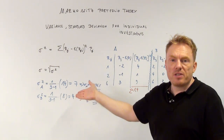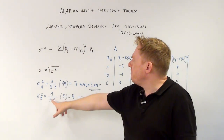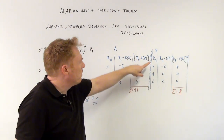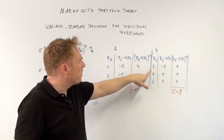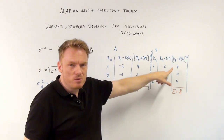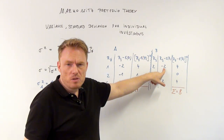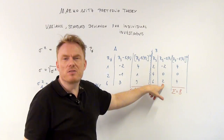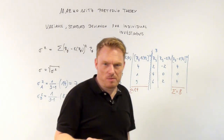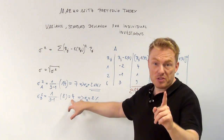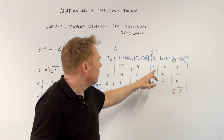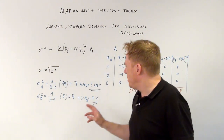The same computation holds true for share B. We have one divided by n minus one, and we have three different situations. The expected return for share B is four percent: two minus four is minus two, four minus four is zero, six minus four is equal to two. We compute the squares: minus two times minus two is four, zero times zero is zero, two times two is four. The sum is eight; eight divided by two is equal to four percent squared, which means there's a standard deviation for share B of two percent.